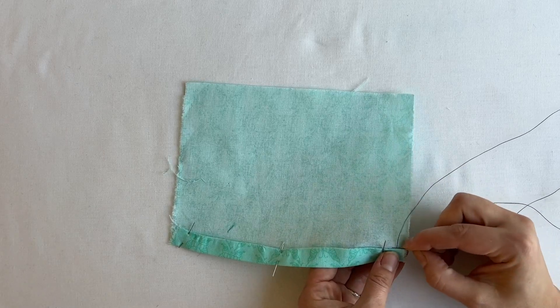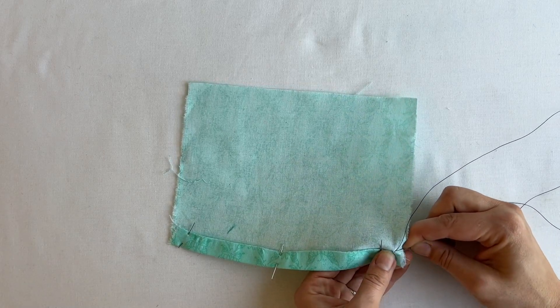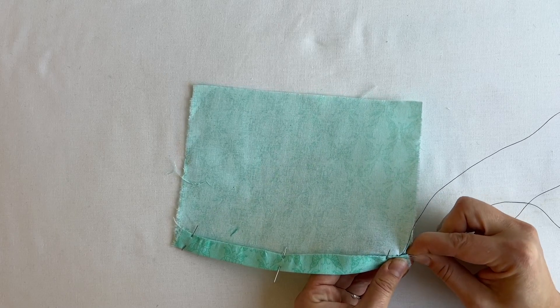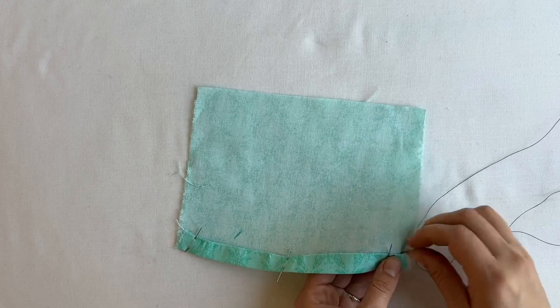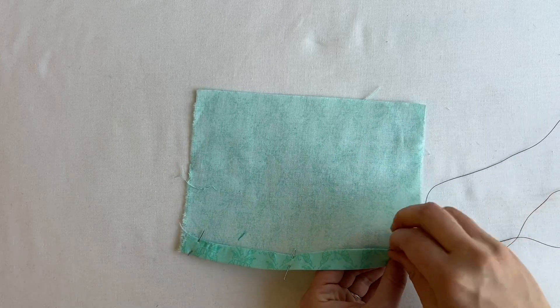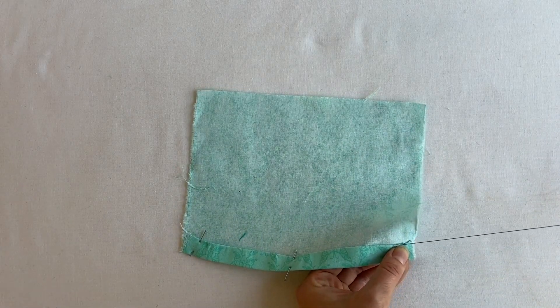Then you're going to take a small bite of fabric, just a couple of threads, a couple of yarns from the outside. And then you're going to put the needle through the tunnel where the turn of the cloth is and pull the needle through. This is our slip stitch.